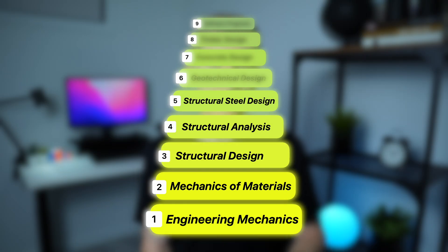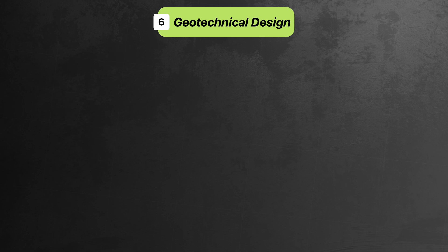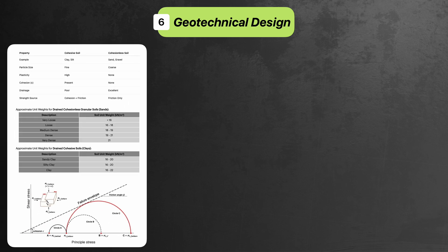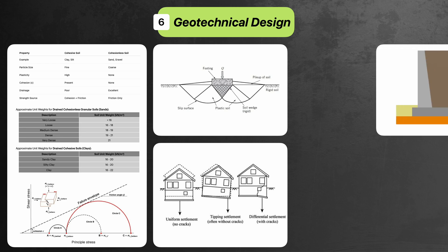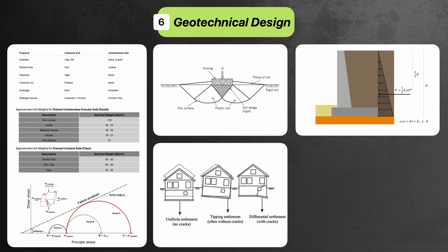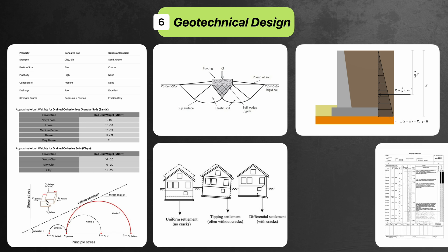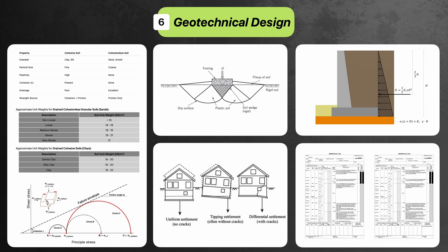Next up is geotechnical design — yes, structural engineers need to know some geotechnical stuff too. Start with basic soil mechanics: cohesive versus cohesionless soils, unit weights and friction angles. From there, get an understanding of bearing capacity and settlement and how these relate to the design of shallow footings like pads and strips, deep foundations like bored piers, and retaining walls. You'll also need to know how to calculate lateral earth pressures, which drives retaining wall design, and how to read geotechnical reports and interpret borehole logs, as this comes up on virtually every project.